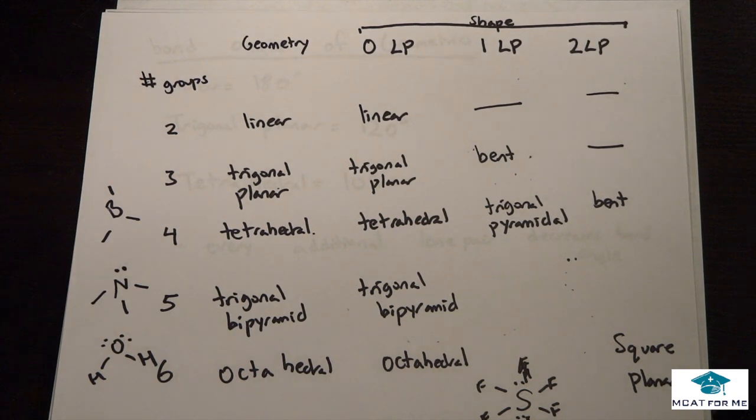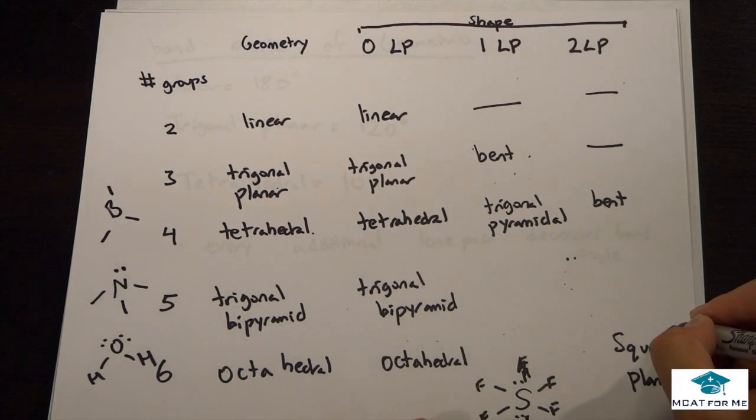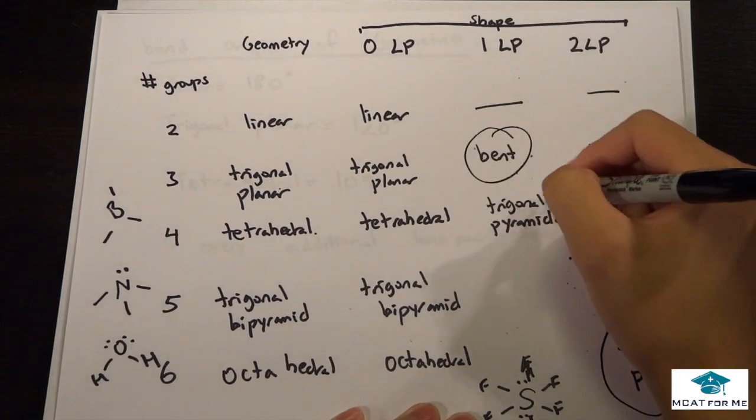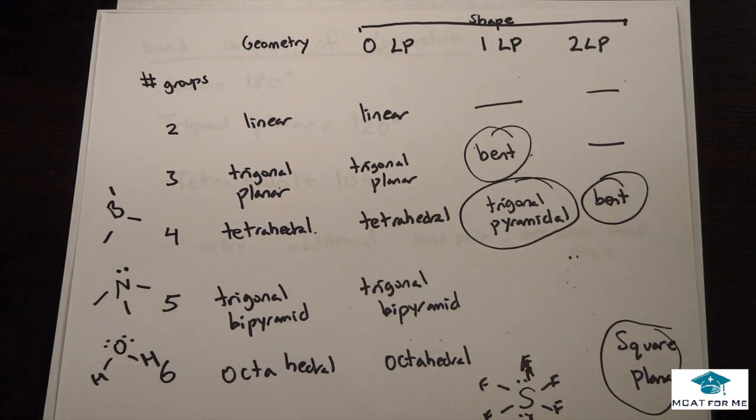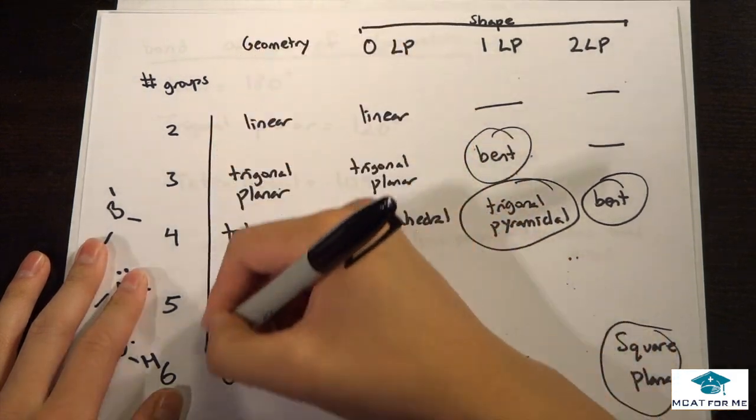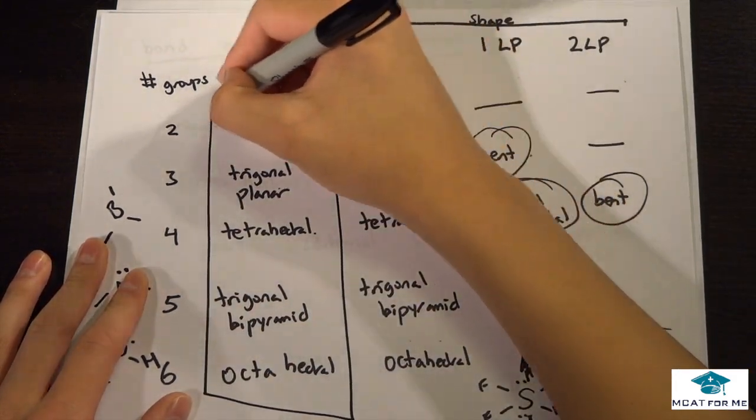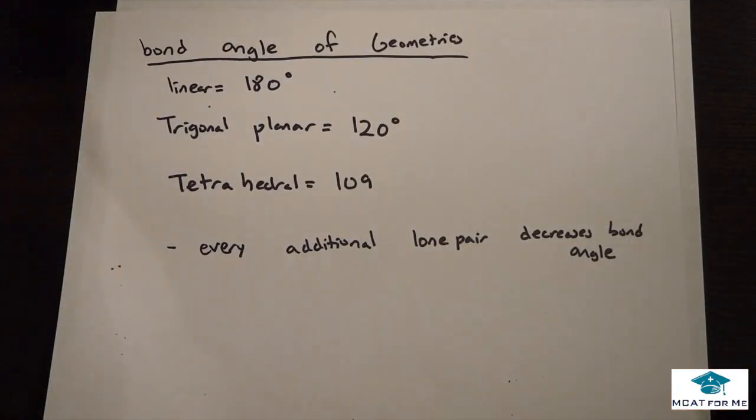But if I left them blank, like in these cases right here with five and six, I left them blank because you don't need to remember them. It's just one more thing that you don't need to memorize. So just remember square planar, bent - those are the four that you really need to remember. And of course, all these geometries are extremely important.